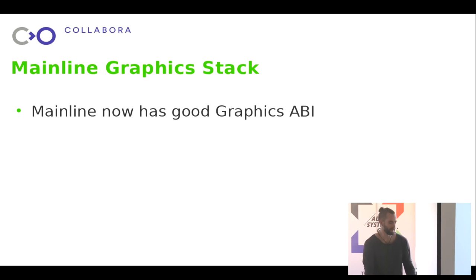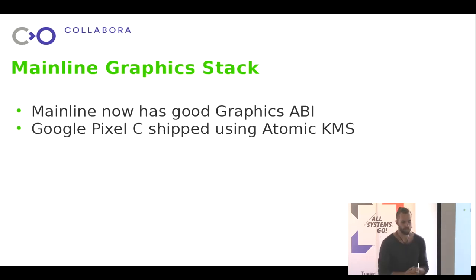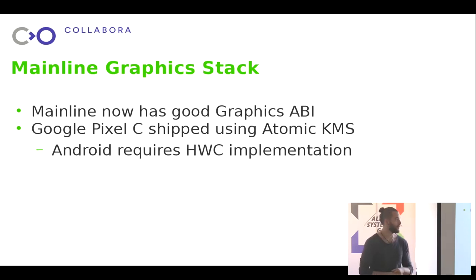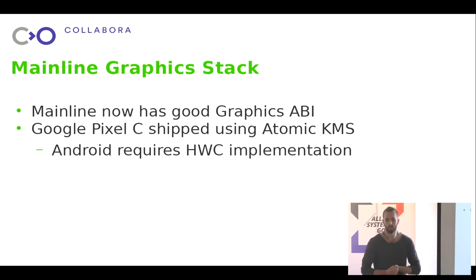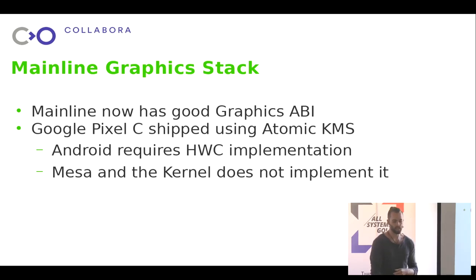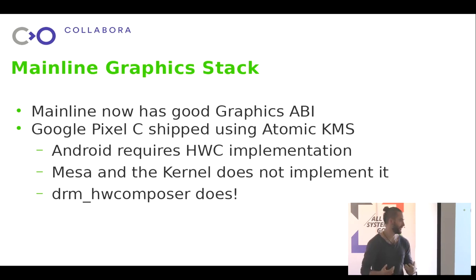The mainline Linux kernel has a very good graphics API, and it's so good that some Google devices have shipped using it. The Pixel C was the first device that shipped using the Atomic KMS API. But if you want to ship it, you need something to implement the HWC. Since you're not using a proprietary vendor driver, you need some software component to implement HWC. Mesa doesn't implement it, nor does the kernel. So something else needs to do it, and that project is called DRM Hardware Composer - it has a long, dull name, but it says what it does.